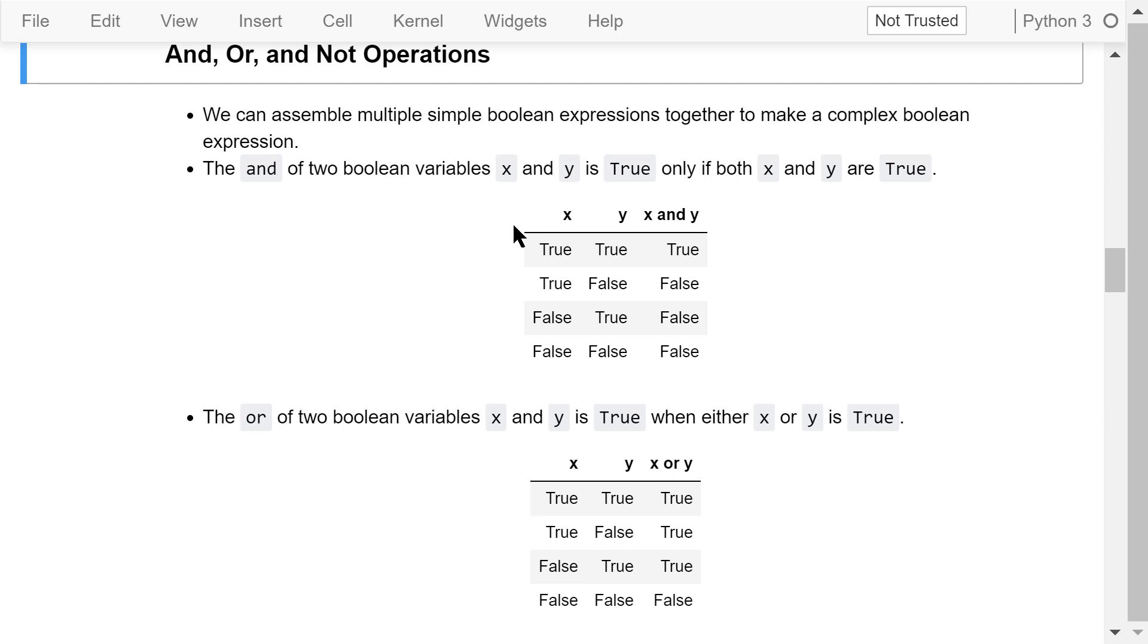Here is the truth table. Think of true as 1 and false as 0. 1 times 1 equals 1. 1 times 0 equals 0. 0 times 1 equals 0. 0 times 0 equals 0.